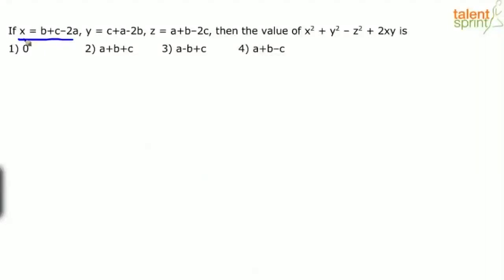It says x equals b plus c minus 2a, y equals c plus a minus 2b, and z equals a plus b minus 2c. Then the value of x squared plus y squared minus z squared plus 2xy — now if you look at the question, are there any conditions given on what the values of a, b, and c should be?